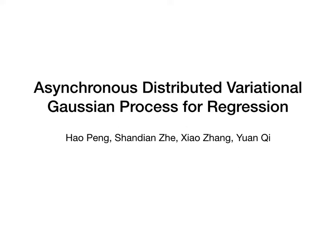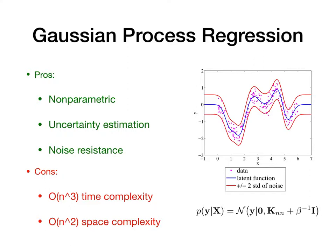To start with, as some of us already know, Gaussian Process (GP) is a very powerful model for problems such as regression. On a small dataset, it is a nonparametric model which can estimate uncertainty and also resist noise. On the right, we show a typical example of a Gaussian Process model trained on a one-dimensional dataset shown as the pink dots. We show the predictive mean of the Gaussian Process in blue and the predictive standard deviation as red lines.